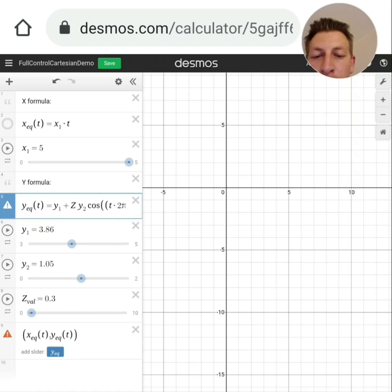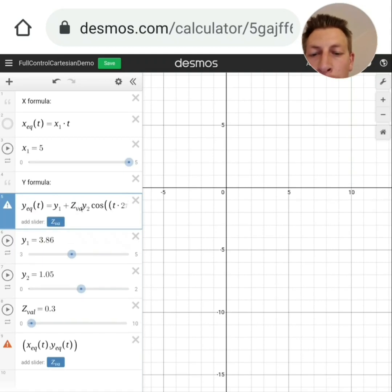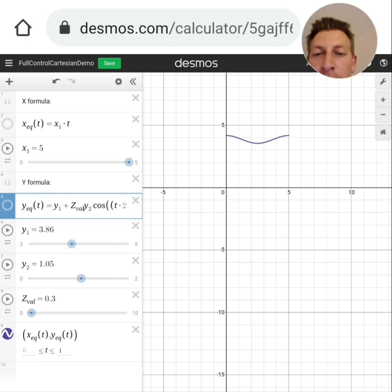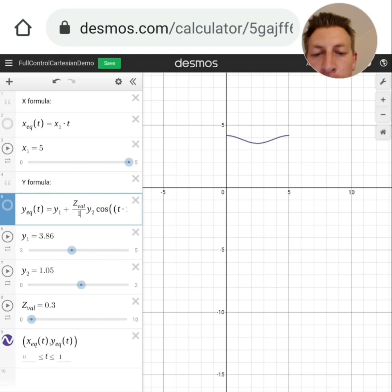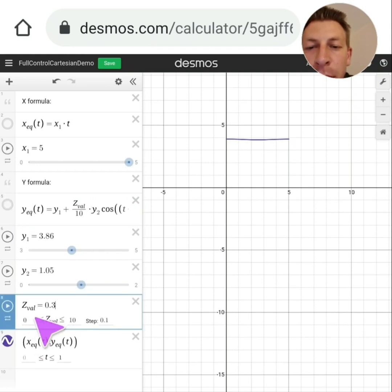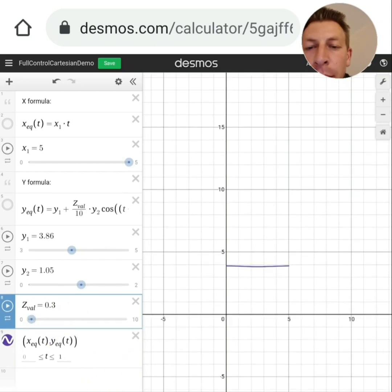And if I set this to be divided by 10, then now I can use this z-value parameter which I've got down here and I could make that move according to the amount that that z-value is.